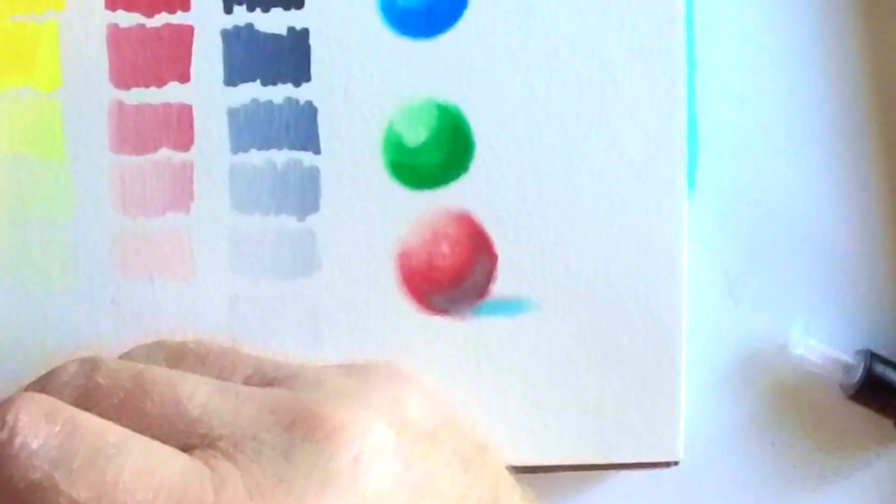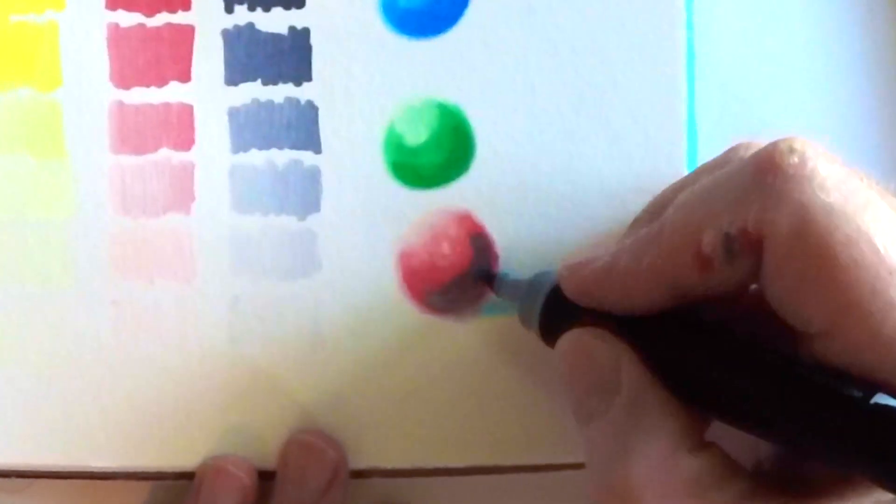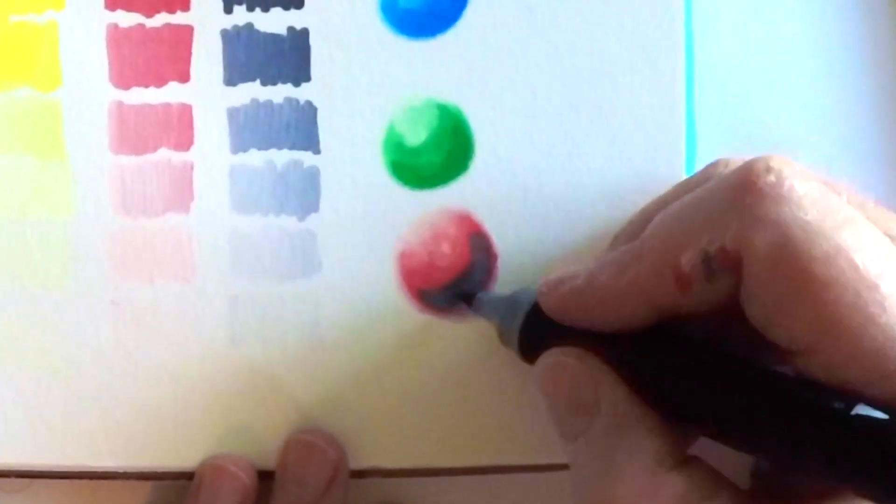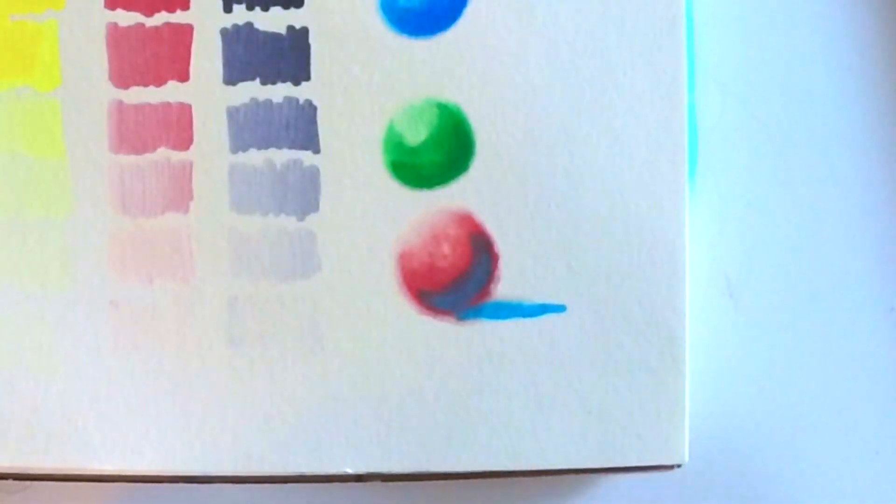I should also quickly mention that this doesn't require any special paper, so I'm just using this in a little sketchbook I had sitting around. It seems to work fine, it doesn't pill or anything like that. There's a little bleed through but I expect that with any kind of alcohol marker.